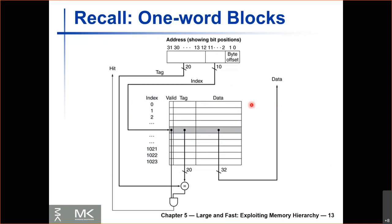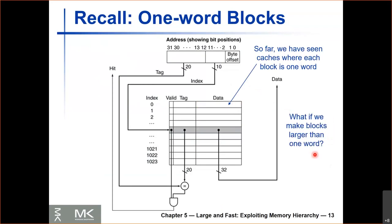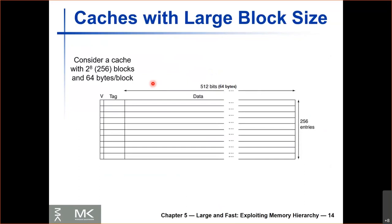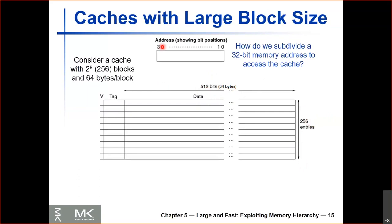Here's an example of a cache with larger blocks. This cache has 256 blocks — that's 2 to the power of 8 blocks — but each block is going to be 512 bits or 64 bytes. So rather than a 4-byte block, we have 64-byte blocks. The question is: how can we take our 32-bit address and divide it to access this cache?